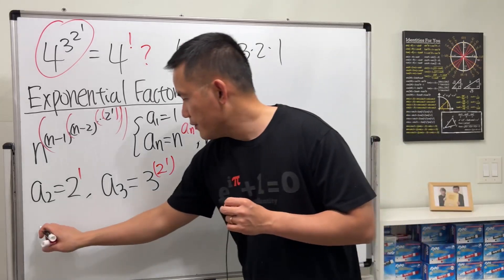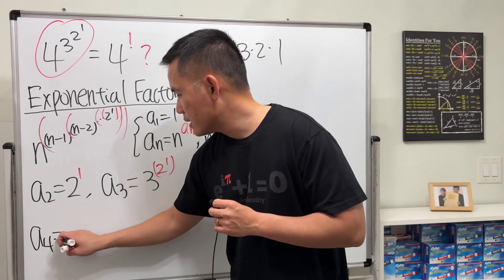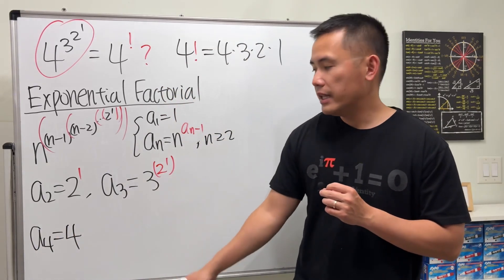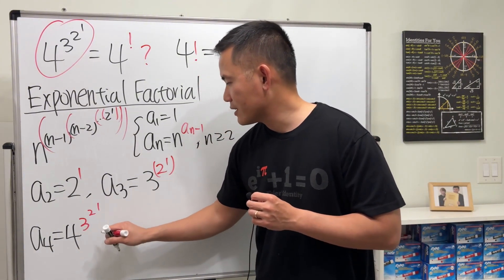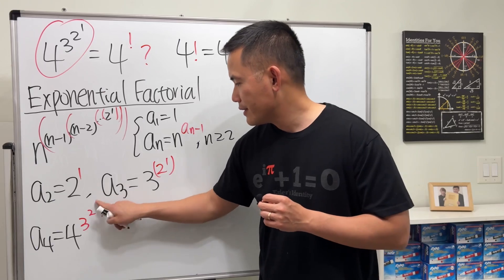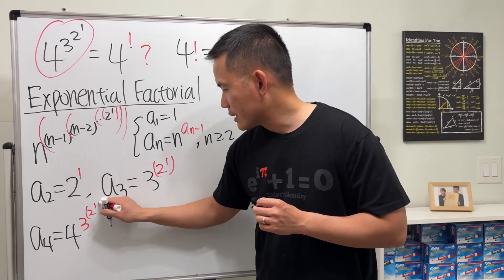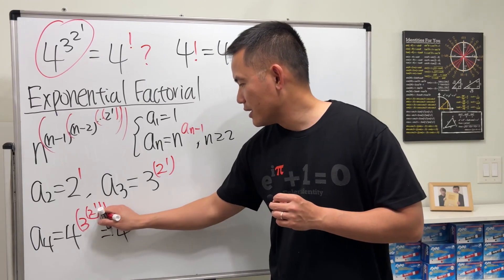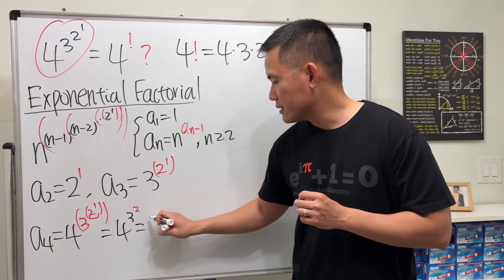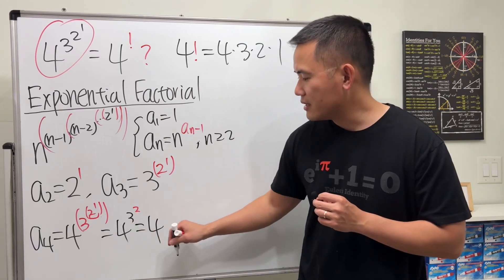And then a4, let's compute what this is. You have four, and then it raised to the previous number for the power, which is three, two, one, like this. Check this out. This is four to the third. This right here is—four to the third is—no, three to the second is nine.